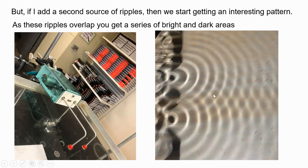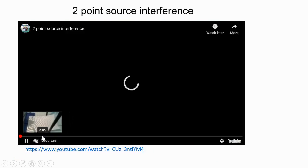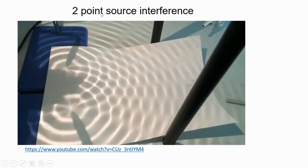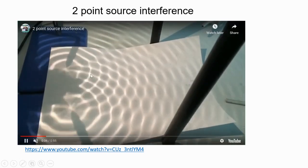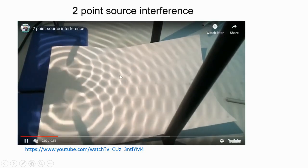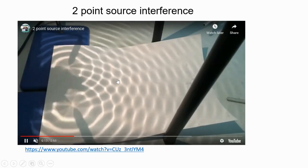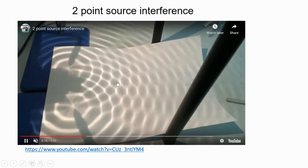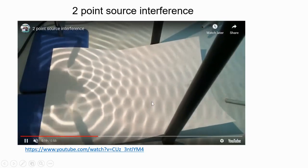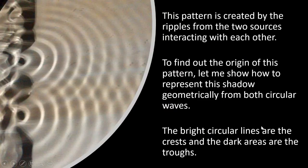Where these ripples overlap, you get a series of dark and bright areas. This video illustrates the two-point source interference — we can see regions with dark lines and bright areas. This pattern is created by the ripples from two sources interacting with each other. To find out the origin of this pattern, let me show how to represent the shadow geometrically from both circular waves.